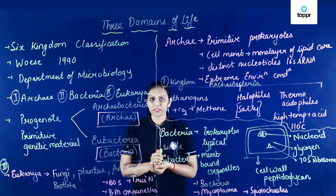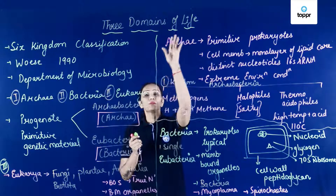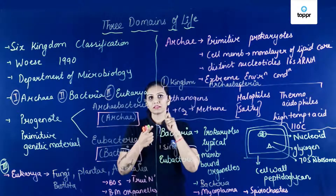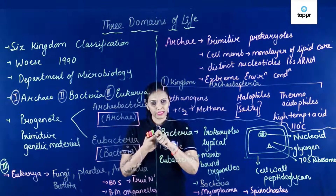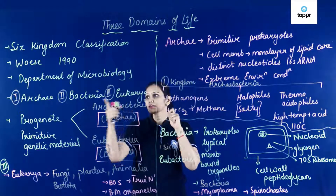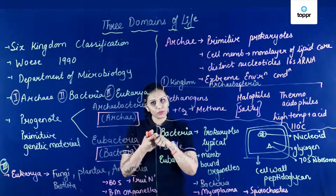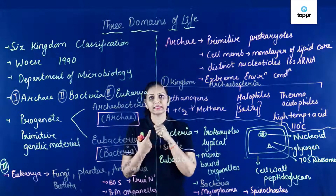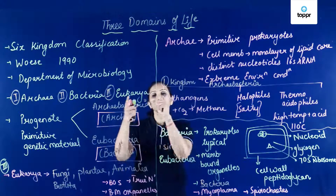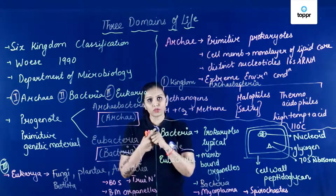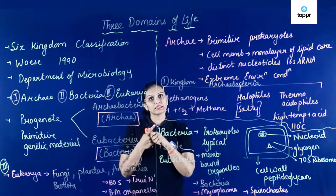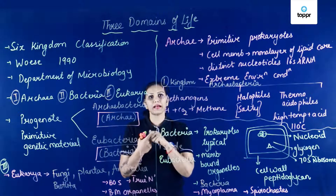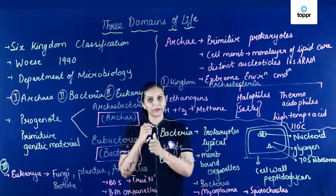I hope you understood that Woese proposed three domains of life — which is Archaea including Archaebacteria, Bacteria including Eubacteria, Cyanobacteria, Spirochetes, Actinomycetes etc., and the third domain is Eukarya, jiske andar hamne kingdom Protista, Fungi, Plantae and Animalia rakha hai.